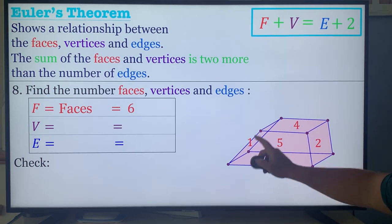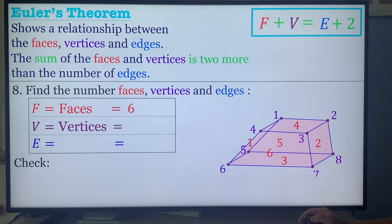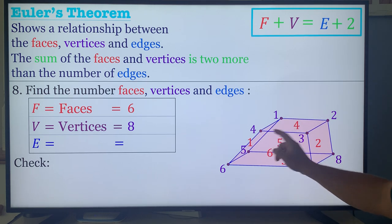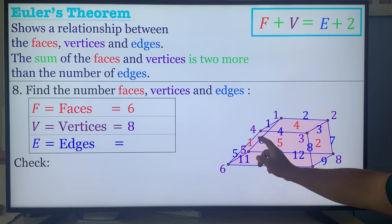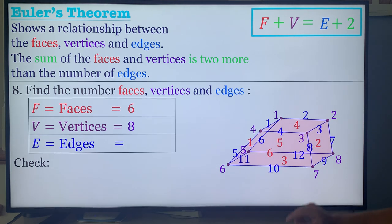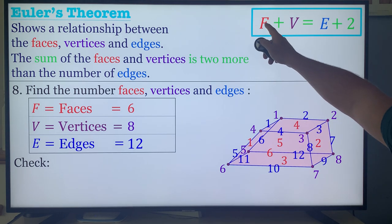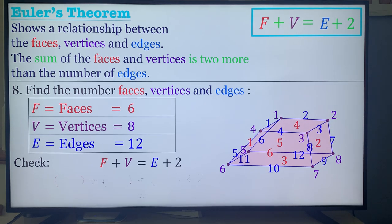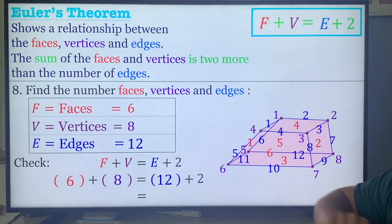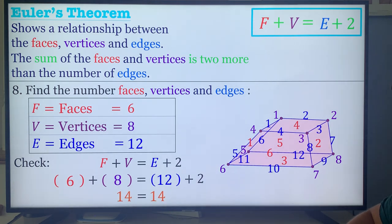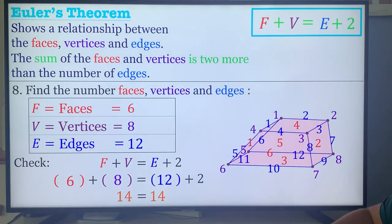Vertices — points: one through eight, that's eight vertices. Edges — lines: counting all around, that's twelve edges. Now, the way to check this is faces plus vertices equals edges plus two: six plus eight is fourteen, and twelve plus two is also fourteen. You're good to go — Euler's theorem is an excellent way to check your answers.